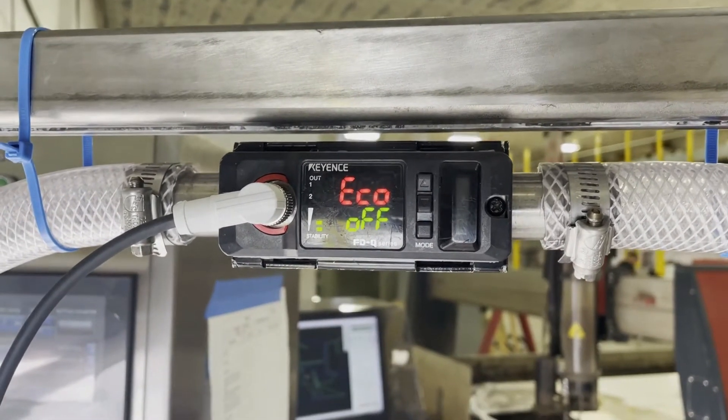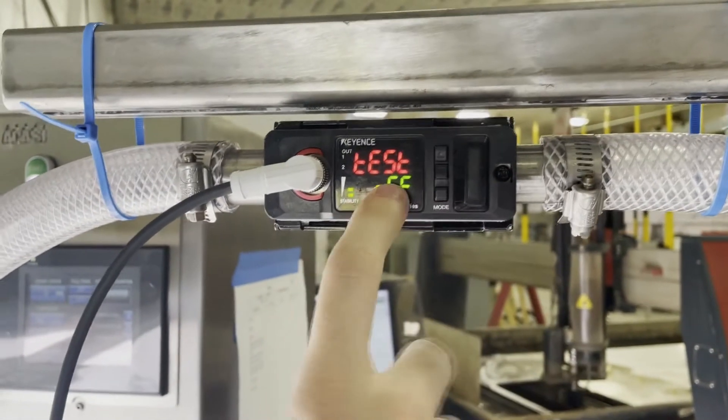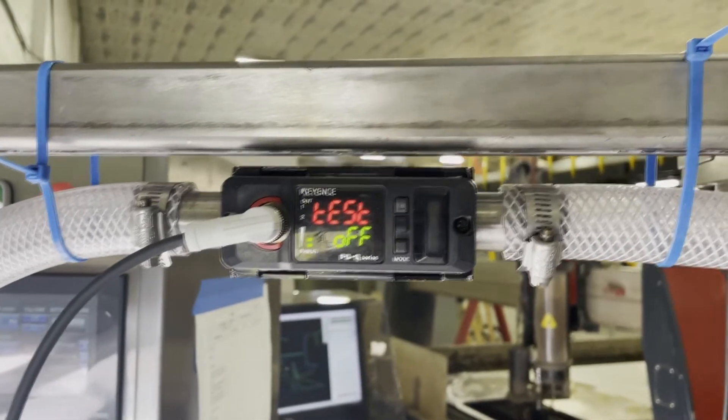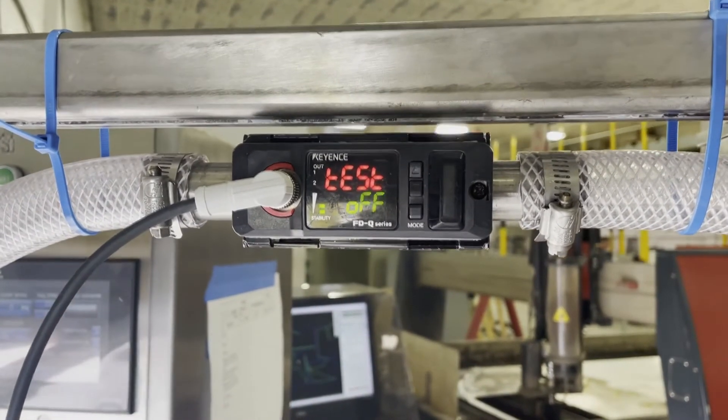Economy. This is if I want to reduce the amount of power consumption this thing can do. I'm going to leave that off. Test output. I can test the output if I want to test it as well. So I can mimic this output if I've got nothing flowing through it to make sure that your PLC is reading it correctly.